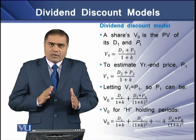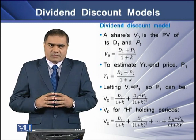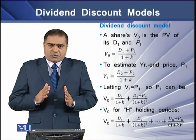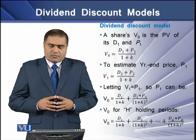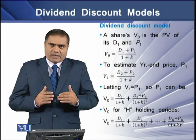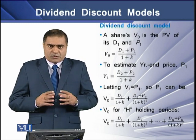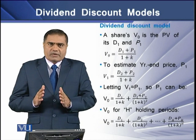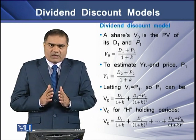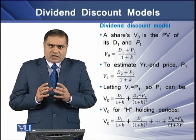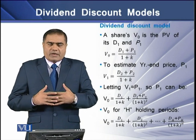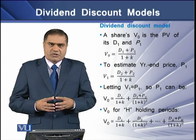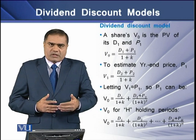Now if we assume that V1 is equal to P1, then V0 can be described as D1 over (1 + k), which is the present value of the expected dividend at the end of year 1, plus D2 plus P2 divided by the capitalization rate. So when determining V1 assuming it equal to P1, we have two values: D1 and the sum of D2 and P2, both divided over the capitalization rate. In this way we determine the intrinsic value related to the first year.